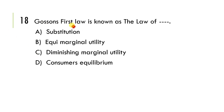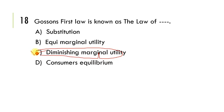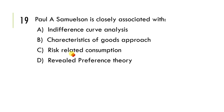Next: Gossen's first law is known as the law of diminishing marginal utility. C is the correct option. Gossen's second law relates to equi-marginal utility. Next: Paul A. Samuelson is closely associated with the revealed preference theory. So D is the correct option.